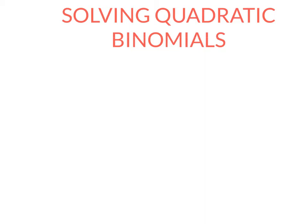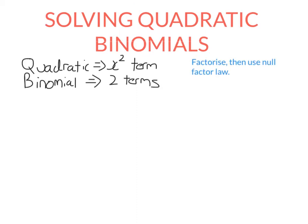We need to start off by understanding what these mean. What makes it a quadratic equation is if it has an x squared term, and what makes it a binomial is if it has two terms. So what we're going to do to solve these equations is factorise, then use the null factor law.